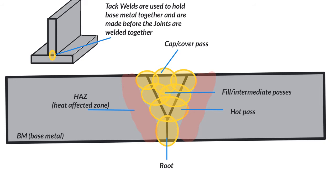Next is just understanding the parts of a weld — what order they come in and things like that. Here's an example starting with a T, which we know is a fillet. A lot of times when I demonstrate this, I'll put a tack on both sides. A tack is there to hold the pieces together temporarily while or before the actual weldment is made. I can make that tack autogenous if I'm TIG welding, but I would have to put some filler metal down if I'm stick welding.